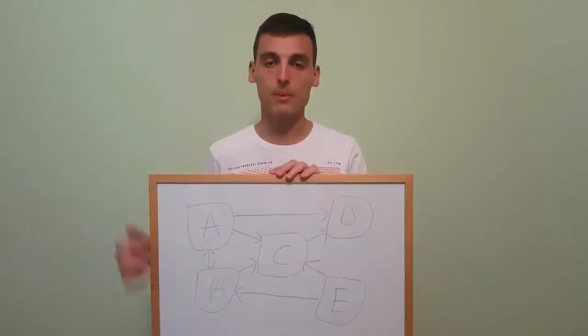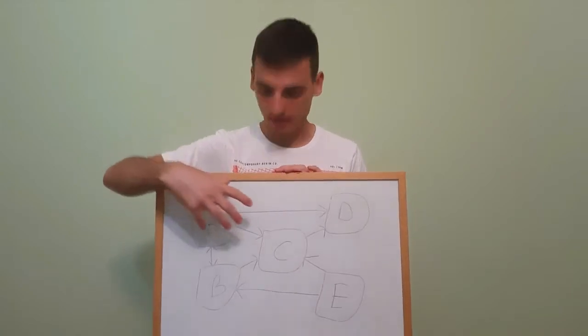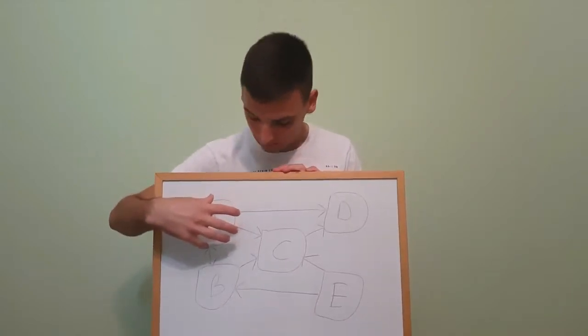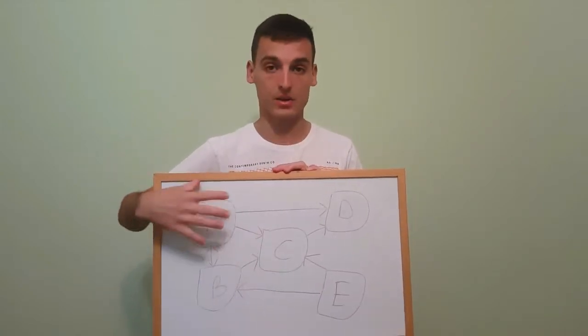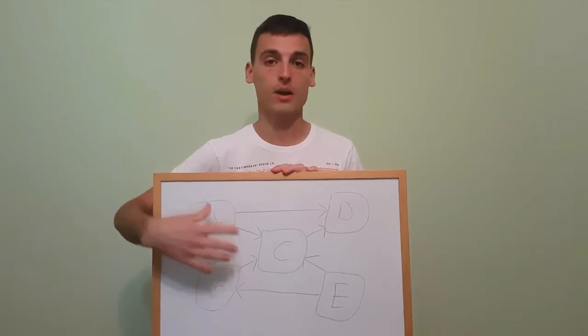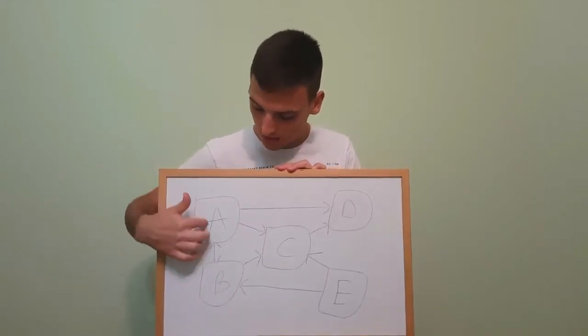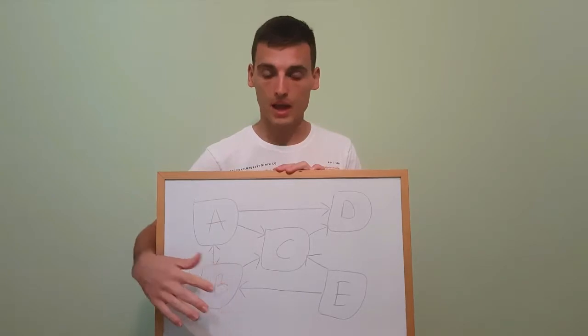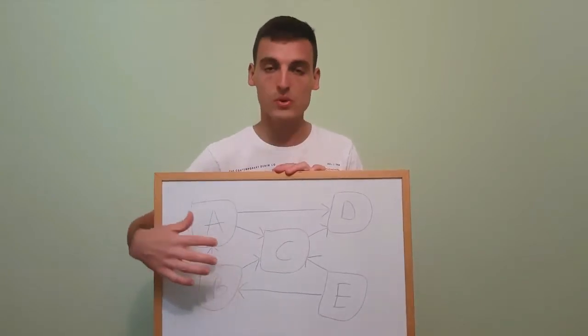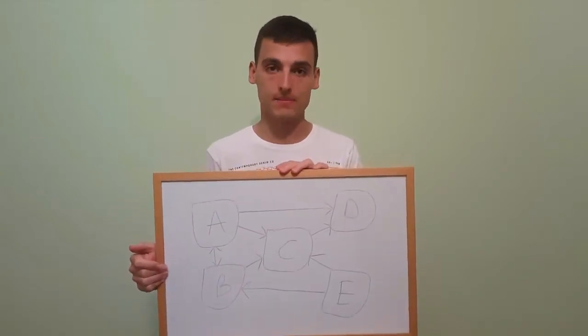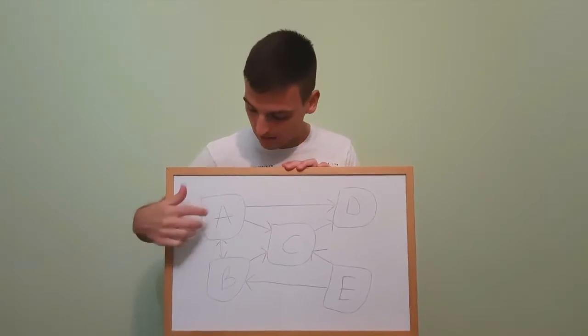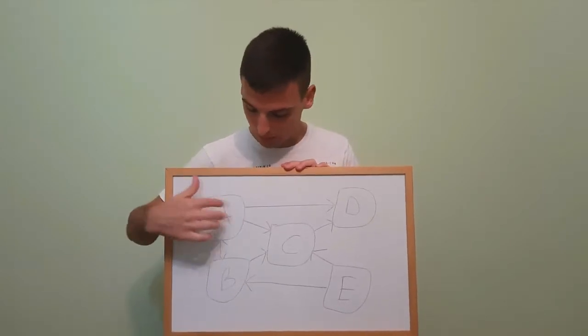Now we're going to take a look at the drawing I prepared to give you a basic overview of PageRank. Here I've drawn what we can imagine as a web with five websites. You can see websites A, B, C, D, and E. The little arrows represent links, and those links point to certain websites.